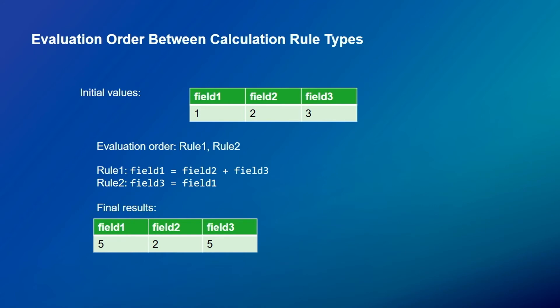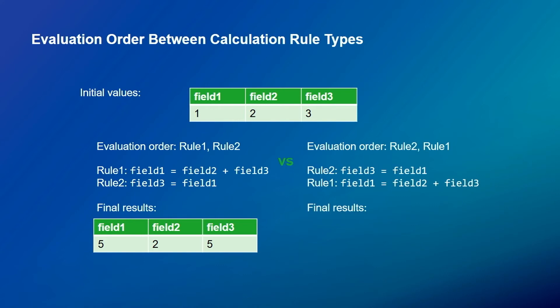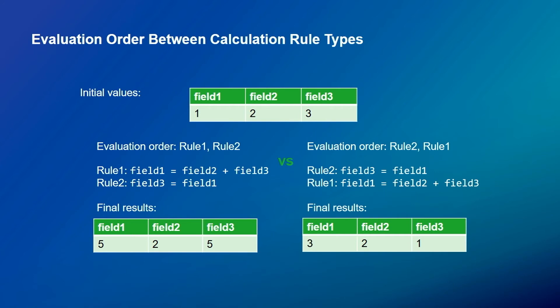But if we evaluate in the opposite order — rule two first then rule one — the result is completely different: 3, 2, 1. We evaluate rule two first, assigning field one's value of 1 to field three. Now field three is 1, plus field two value of 2, so field one becomes 3. This highlights that the calculation order matters significantly.